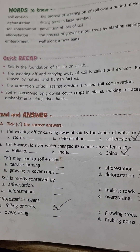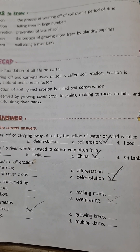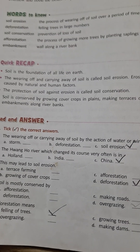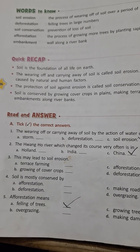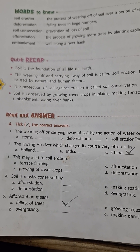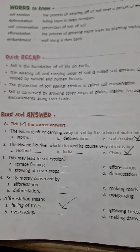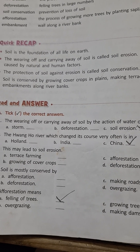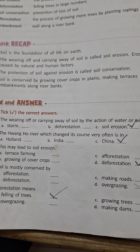The Huang He river, which changes its course very often, is in China and it is called the Sorrow of China. Deforestation can also lead to soil erosion.